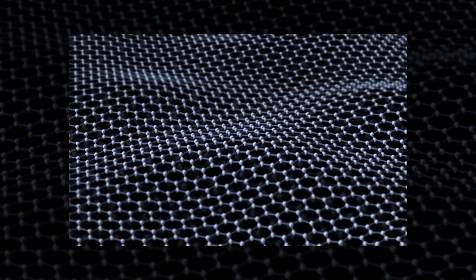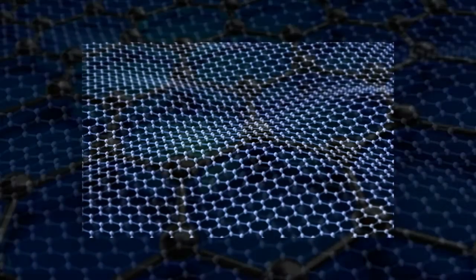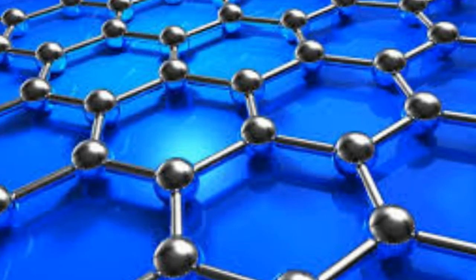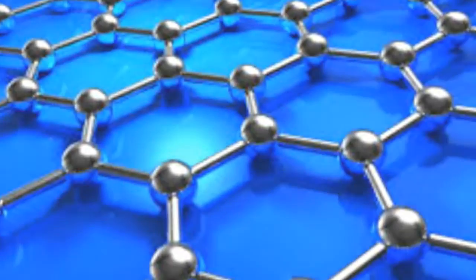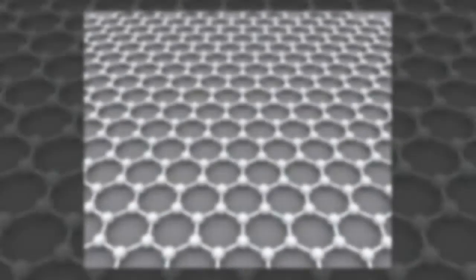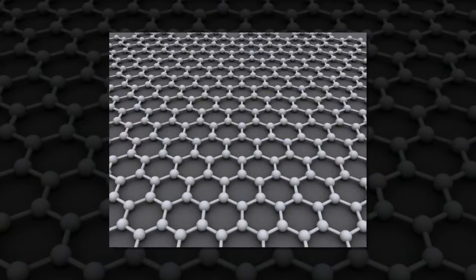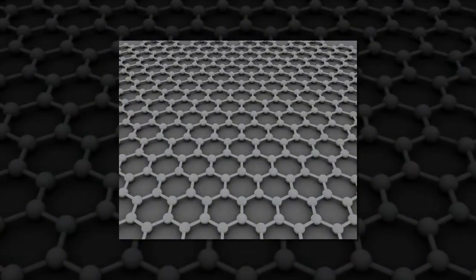The researchers used a unique experimentation and modeling approach to become the first to examine the mechanics of this previously ignored material at the atomic level. What they discovered could potentially unlock the secret to successfully scaling up graphene oxide.